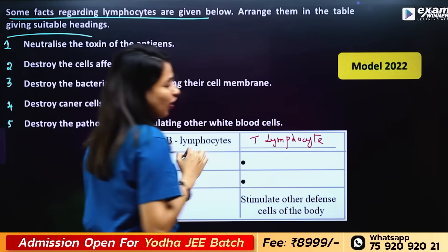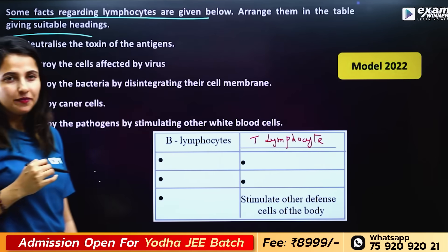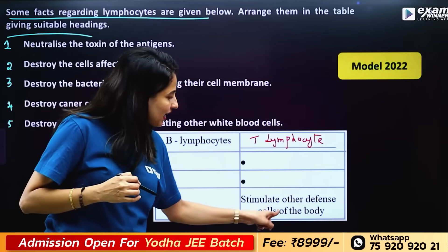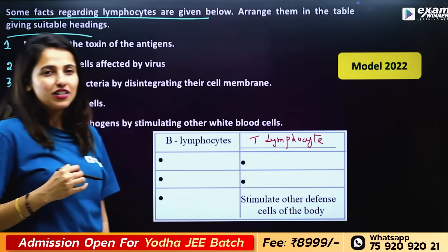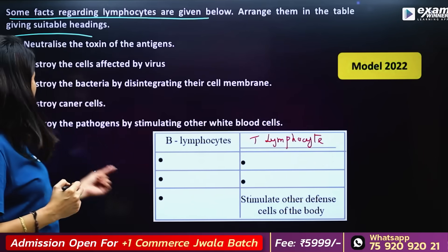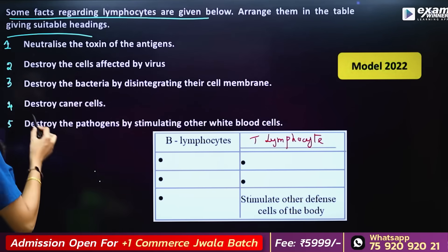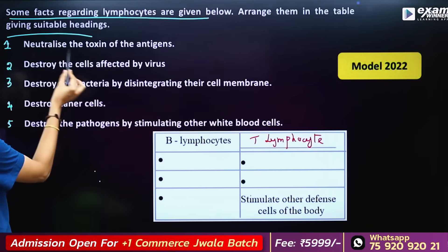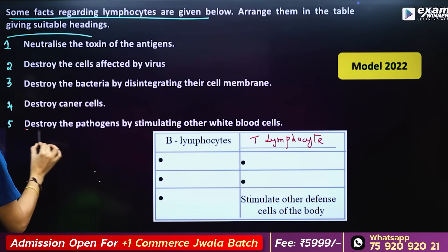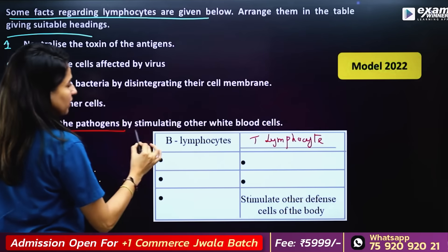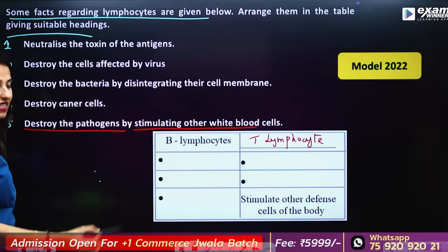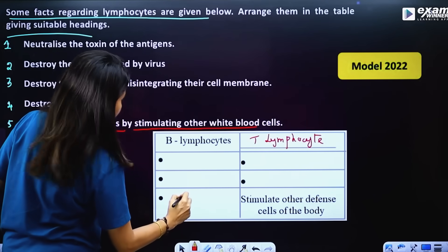We talked about their common function. B lymphocytes stimulate different cells of the body. T lymphocytes destroy pathogens by stimulating other white blood cells.